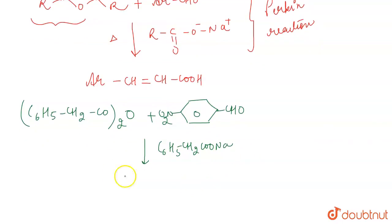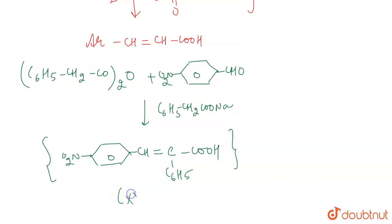So what are you going to get? We are going to get NO₂ here, this will be CH=CH-COOH, but we will also have a C₆H₅ group attached to this carbon. So this is the compound X that we are going to get in this particular reaction which is known as the Perkin reaction.